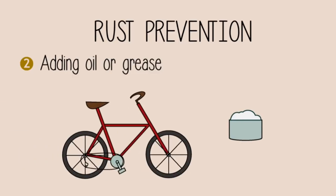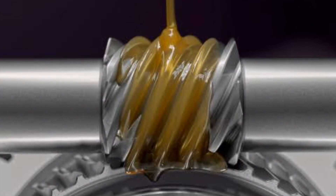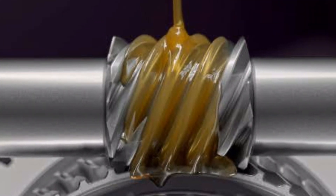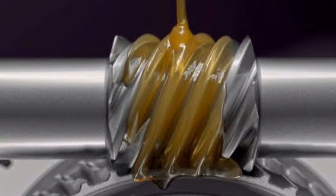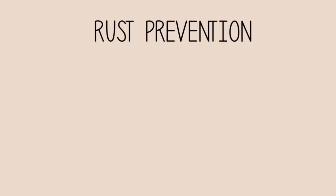Another method is adding a layer of oil or grease. In bicycle chains or machine parts, oil or grease is used because it lubricates and lowers the rate of rusting by coating the iron surface.